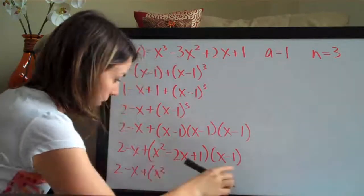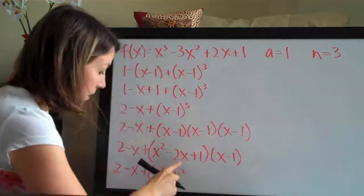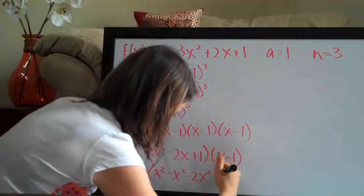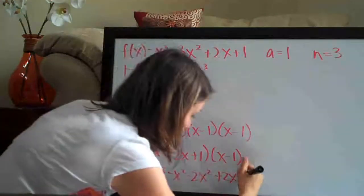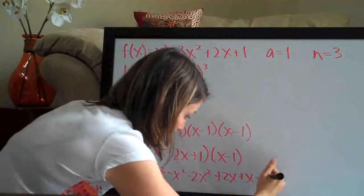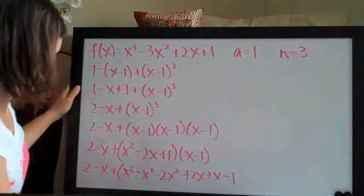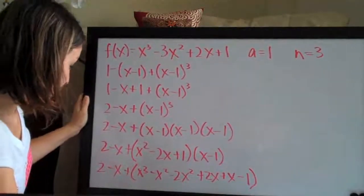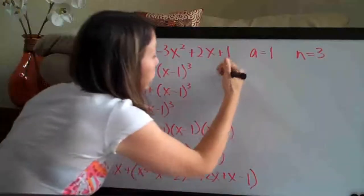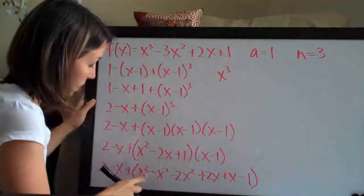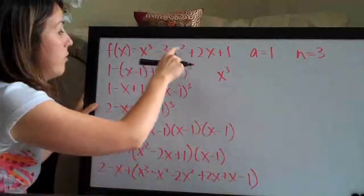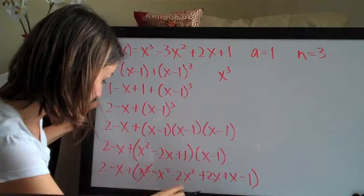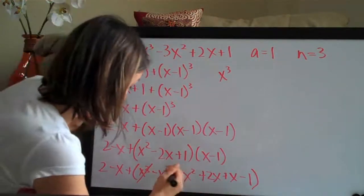Now multiplying x squared minus 2x plus 1 by x minus 1: x squared times x is x cubed, x squared times negative 1 is minus x squared, negative 2x times x is minus 2x squared, negative 2x times negative 1 is plus 2x, 1 times x is plus x, and 1 times negative 1 is minus 1. Now let's simplify in order of highest power first. We have x cubed as our only cubed term. Then negative x squared minus 2x squared is negative 3x squared.